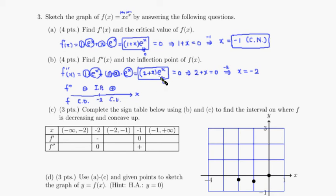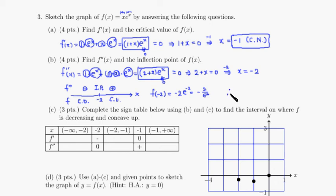We need to find the corresponding y-value at x = -2. Plugging negative 2 into the original function: f(-2) = -2 times e to the negative 2, which equals negative 2 over e squared. Therefore, the inflection point is (-2, -2/e²).